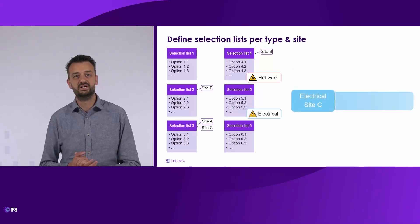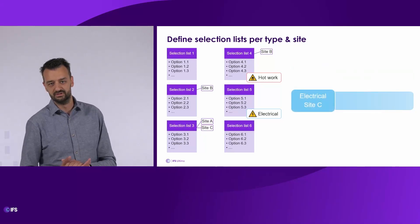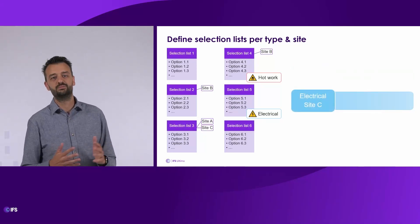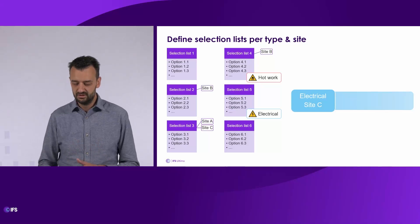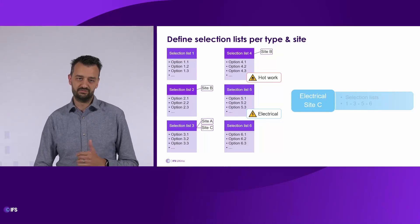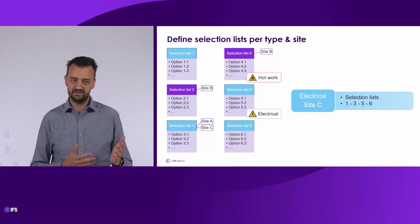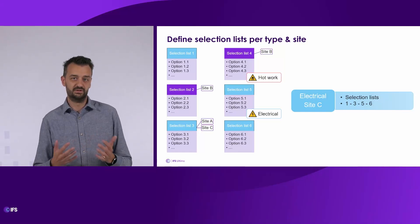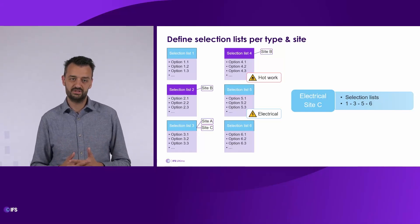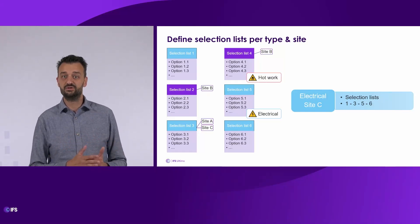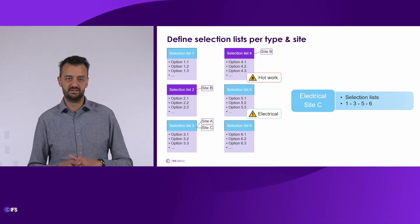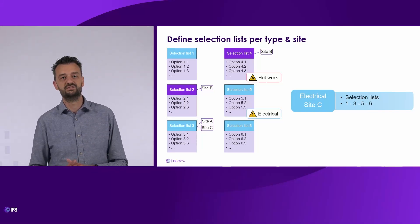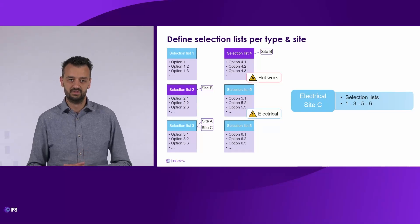For an electrical permit for site C, it will have the following selection lists: selection list one and six, because those are always applied; then selection list three, because it's a permit for site C; and selection list five, because it's an electrical permit.